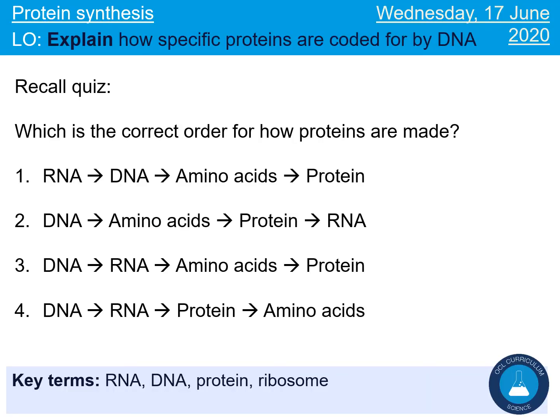Let's check our understanding. Pause the video and choose the correct answer from options one, two, three, or four. We should have recognised that DNA is the very starting molecule. We then need to make a template strand called RNA. RNA then codes for a specific sequence of amino acids, which leads to a specific shape protein. If you didn't get that right, make sure you go back in the video and listen to the explanation again.